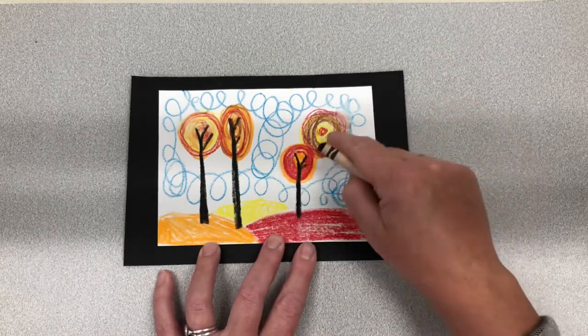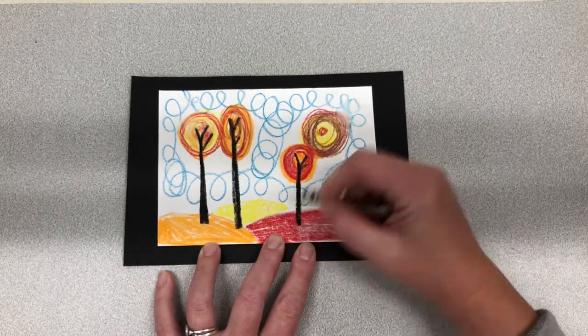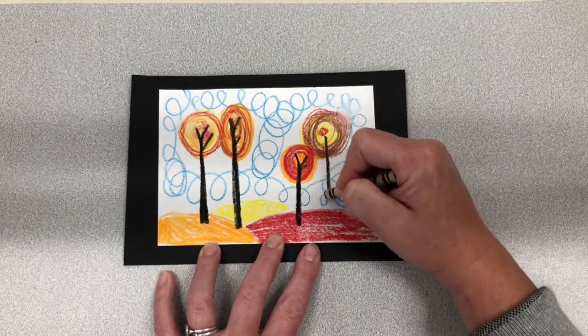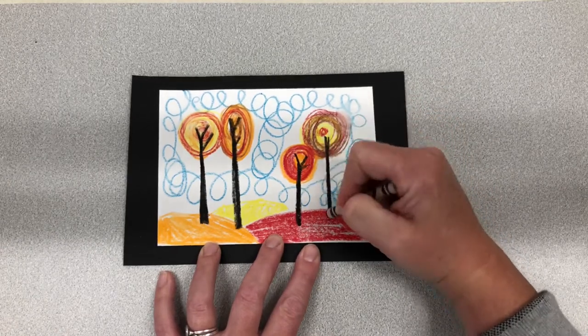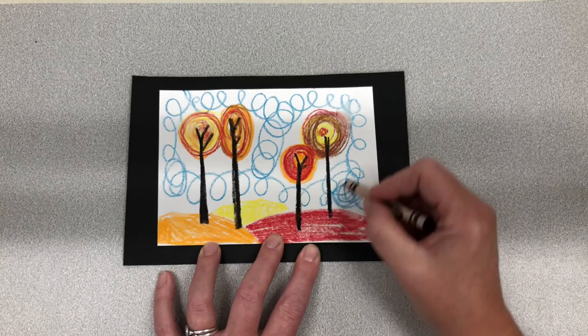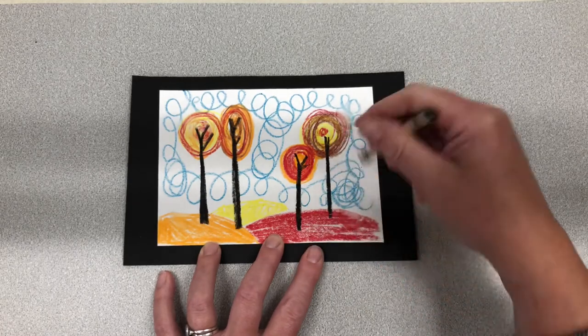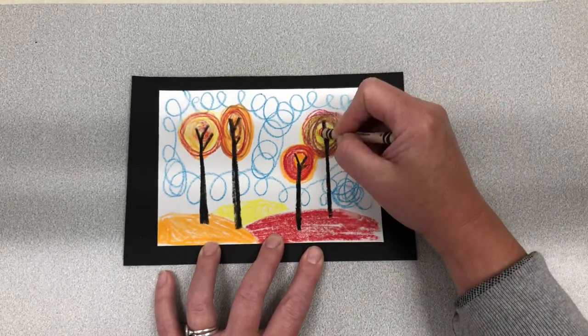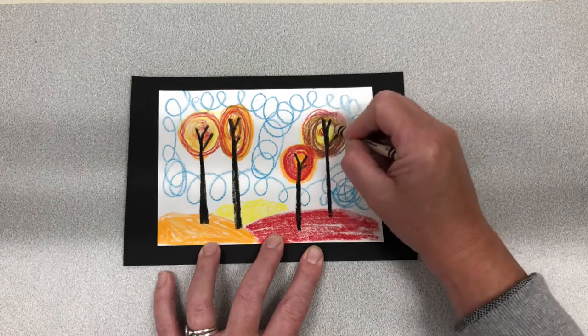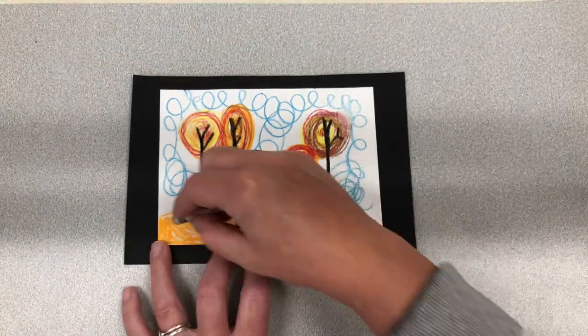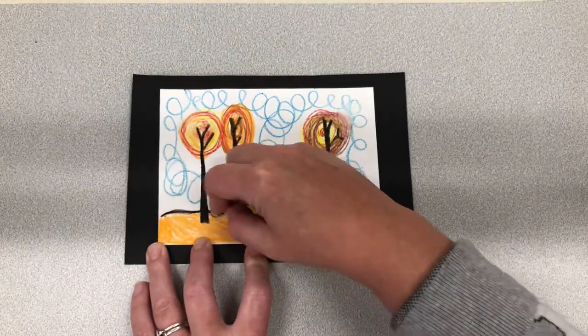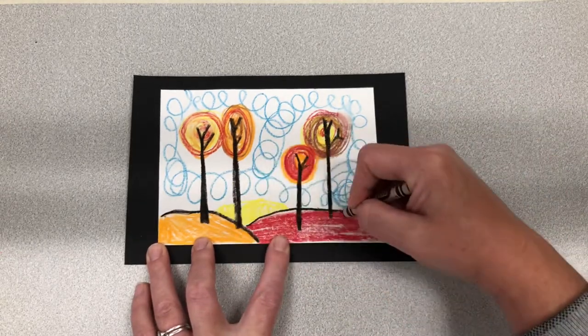Now this tree is behind this one, so I want to make sure that my black line is shorter. This way it looks like this is further in the distance, creating space in my artwork. Now I'm going to outline the ground just because I like the way the black line looks.